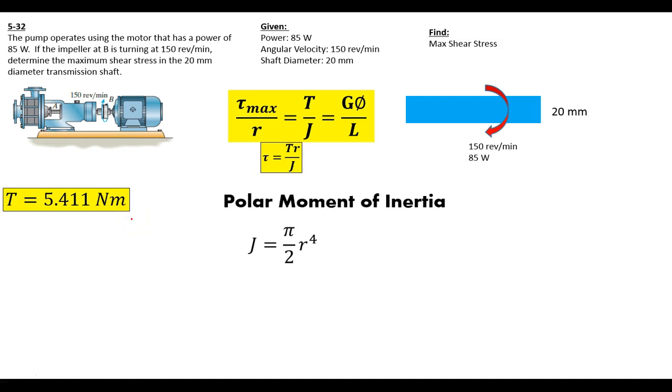Polar moment of inertia. This is our equation. We're going to assume that it's a solid shaft. Since we know the diameter is 20 millimeters, our radius is 10. But we've got to put it into meters instead of millimeters, so 0.01 meters to the fourth power. When we do the mathematics on that one, we get 1.57 × 10⁻⁸ meters to the fourth power. So now we have the polar moment of inertia. We have our torque, our radius, and our polar moment of inertia.